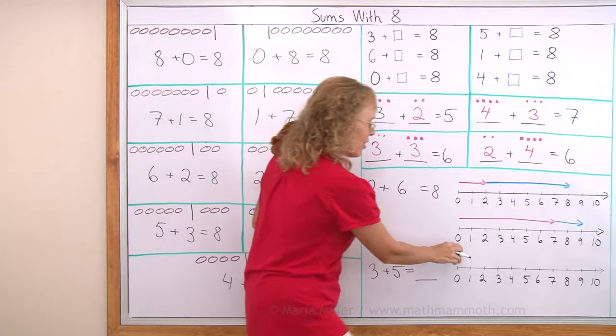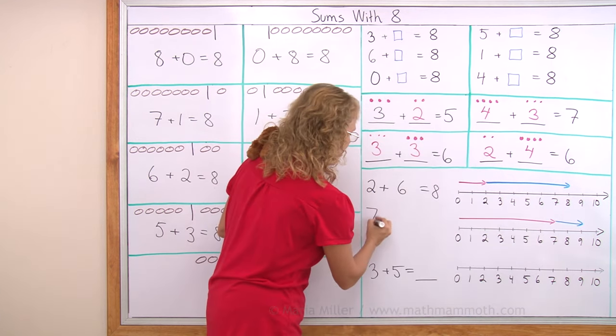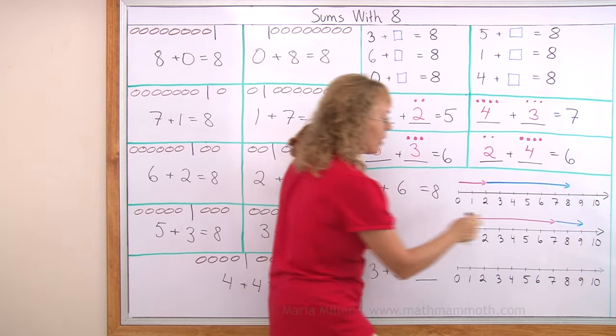Another one. The first arrow goes from 0 to 7. So it is 7 units long. The second arrow. How long is it? How many units long?